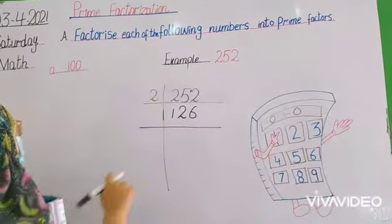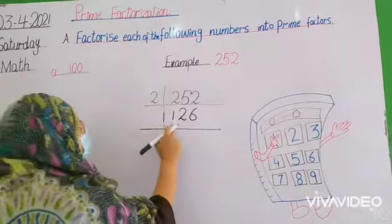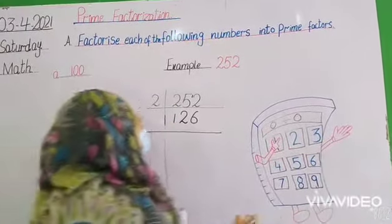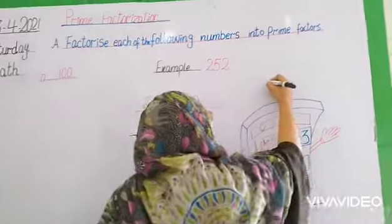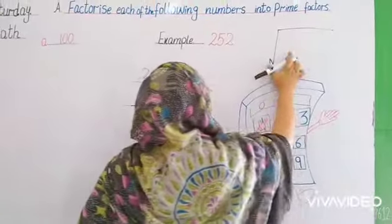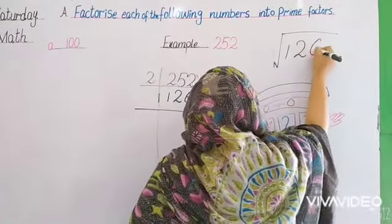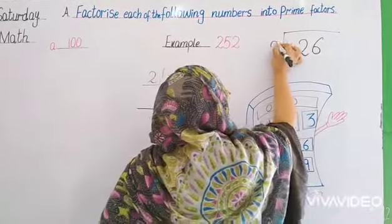Students, don't be confused that 126 is a very big value for 2's table. There's another method to do this. We'll do division. We'll put the larger value inside: 126, and divide by 2.